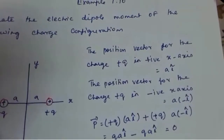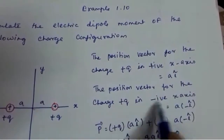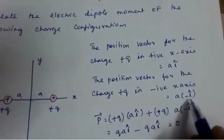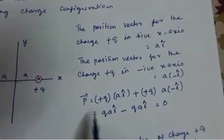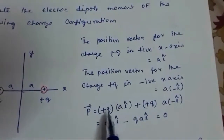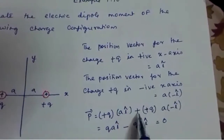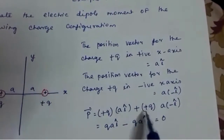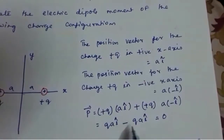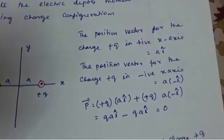For the negative x-axis, the position vector for the charge +q is a into -î-vector. Now writing the dipole moment: P = +q(aî) + q(a)(-î) = qaî - qaî, which is equal to 0.